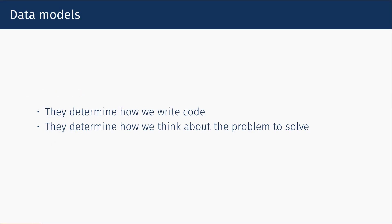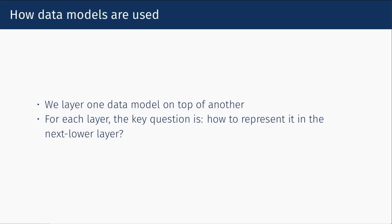Data models are very important. They determine not only how we write code, but they determine how we think about the problem to solve. We layer a data model on top of another data model, and for each layer of the data model, the key question is how do we represent it in the next lower layer?